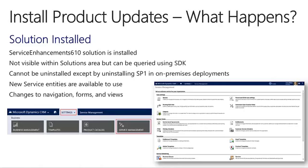Once this solution is installed, the new service entities introduced with this update are available to use. Those entities were created during the update to Service Pack 1 or CRM Online Spring 14, but were not previously available. In addition to the new entities, there are also new items that appear within the CRM navigation, and some existing forms and views will be modified. The full details of these changes will be covered in the next lessons of this module.